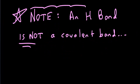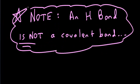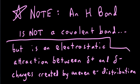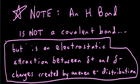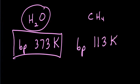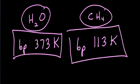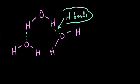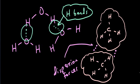Special note: a hydrogen bond is not a covalent bond, but an electrostatic attraction between partial positive and partial negative charges created by uneven electron distribution. To show the strength of hydrogen bonds: water molecules form hydrogen bonds between neighbors and have a boiling point of 373 K. Methane, a similar-sized but nonpolar molecule, has a boiling point of only 113 K — a difference of over 200 degrees — because methane can only form weak dispersion forces.